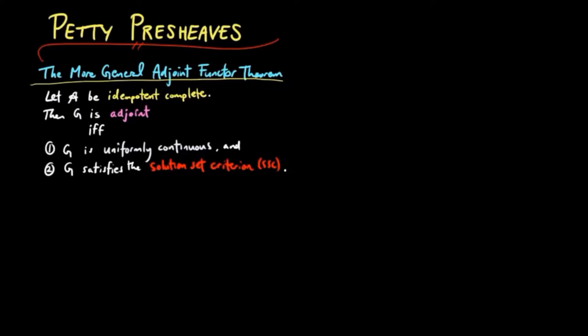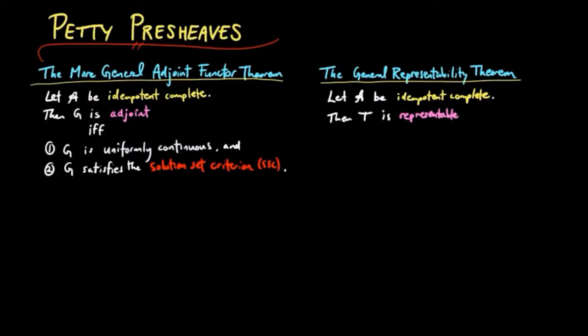The translation of this into pre-sheaves becomes the general representability theorem. Let A be an idempotent complete category, then the pre-sheave T is representable if and only if: (1) T is pointwise continuous, and (2) T is petty.